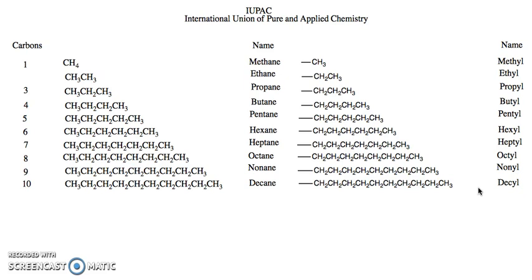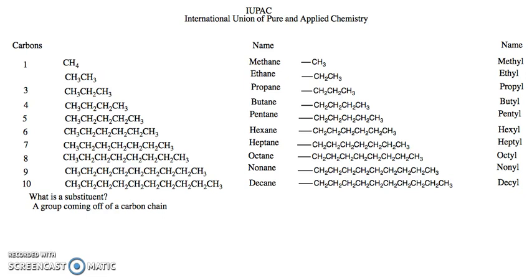There are chains and substituents longer than 10, but we won't worry about those right now. What do we mean by a substituent? The simplest way to define it: a substituent is a group coming off of a carbon chain. For instance, this molecule is pentane because it has one, two, three, four, five carbons.